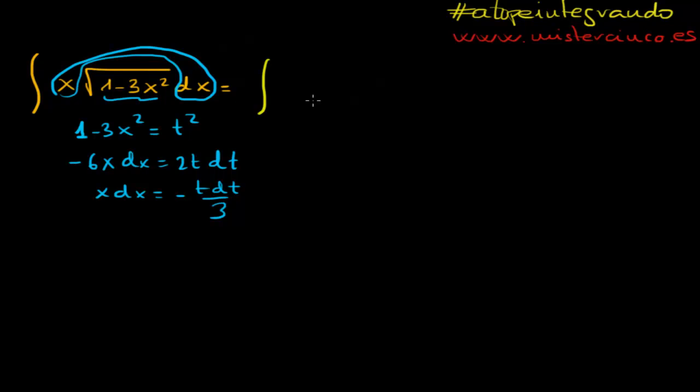Because, look, we can do here, let's put it in yellow. We can have here the square root of this is square root of t squared, and now, look that x dx equals to, let's put here, minus t dt over 3.